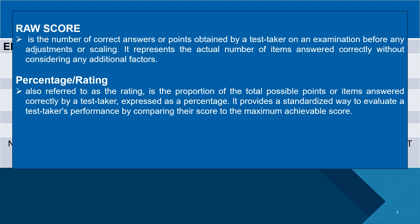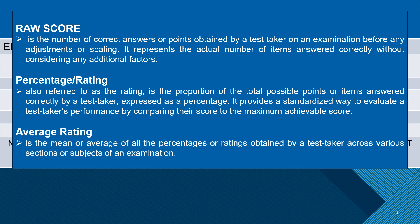Second, the percentage, also referred to as the rating, is the proportion of the total possible points or items answered correctly by a test taker, expressed as a percentage. It provides a standardized way to evaluate a test taker's performance by comparing their score to the maximum achievable score. Lastly, the average rating is the mean or average of all the percentages or ratings obtained by a test taker across various sections or subjects of an examination. It serves as an overall indicator of a test taker's performance and is often used as a criterion for passing or failing an examination.